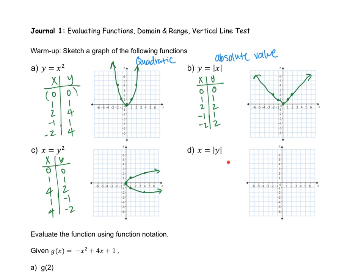For our last one, we also have x by itself. I'm going to make that table and plug in values for y: 0, 1, 2, negative 1, negative 2. Plugging these into the absolute value function, they all turn positive for x. So graphing them: (0,0) is at the origin, (1,1) is right here, (2,2) is there. For y equals negative 1, x is positive 1, but it goes down 1 for y. When I draw the graph, it comes out sideways as well.